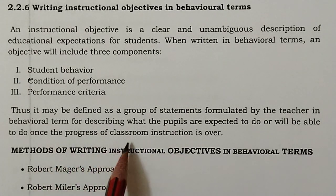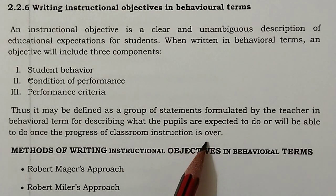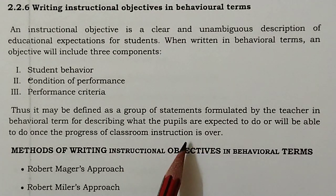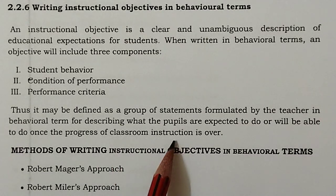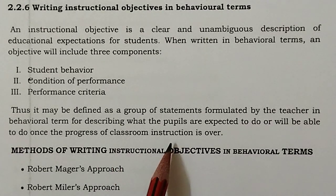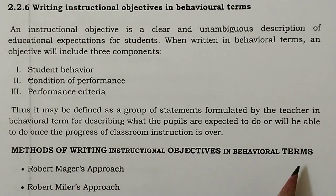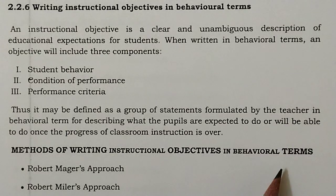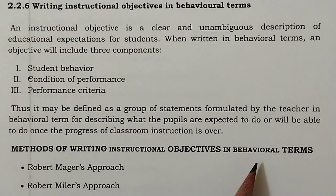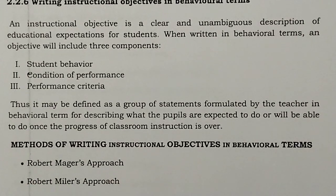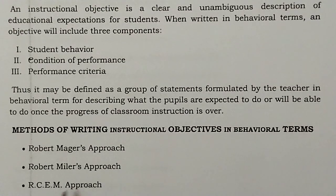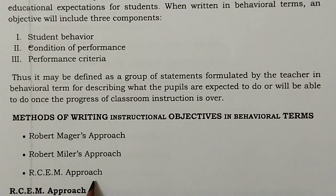Once the progress of classroom instruction is over, objectives have been studied in behavioral terms. Methods of writing instructional objectives in behavioral terms include: first, Robert Mager's approach; second, Robert Miller's approach; and third, the RCEM approach.